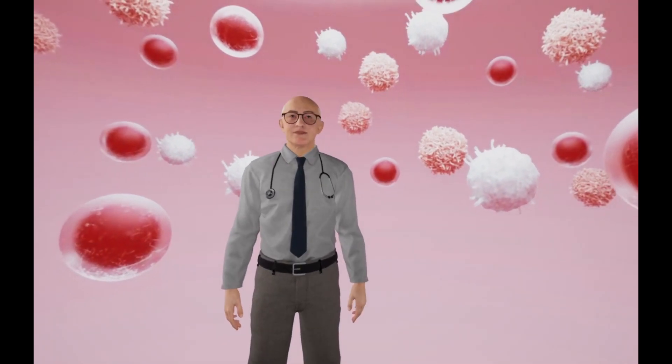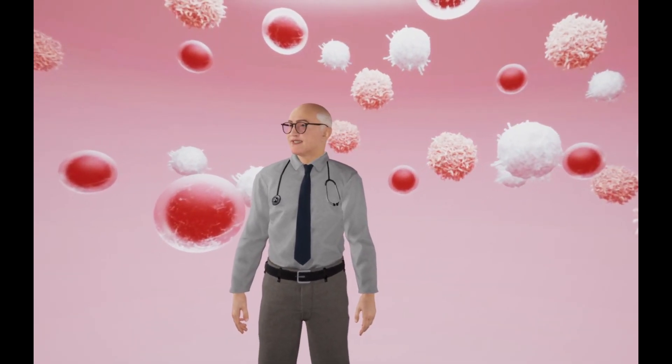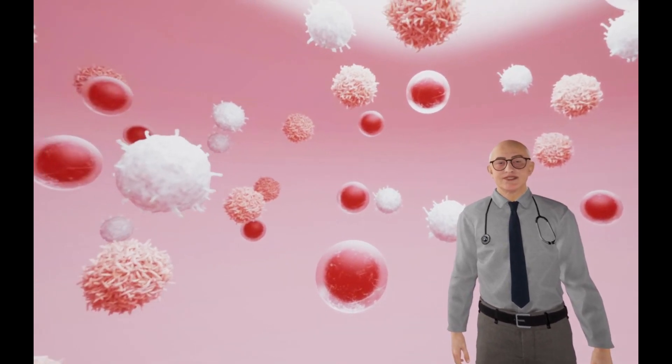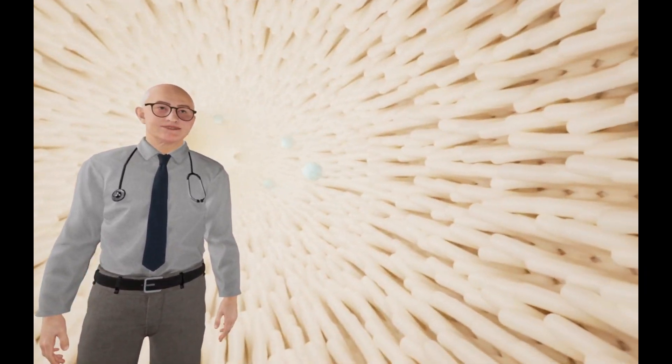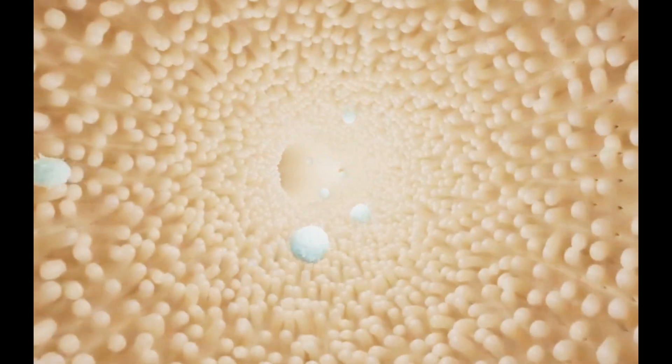How, then, can cancer cells grow and multiply with millions of these killer T-cells patrolling your body, searching for the tell-tale signs of cancer? Let's now look inside this stomach, where cancer cells have begun to multiply.